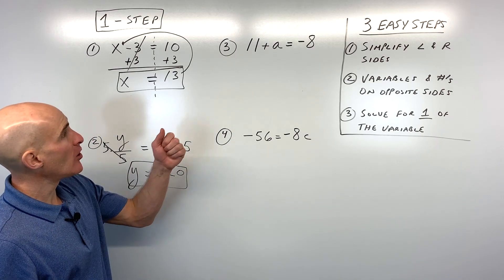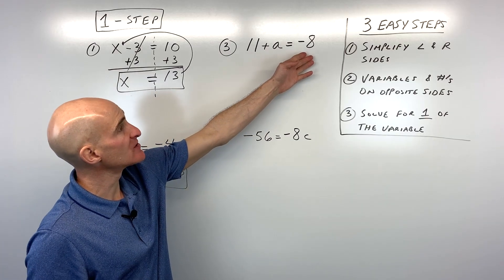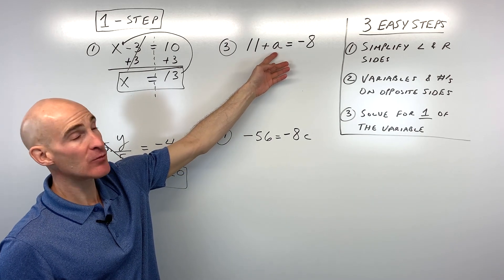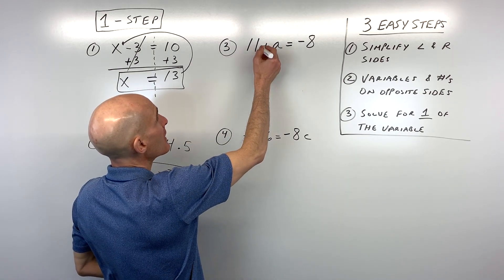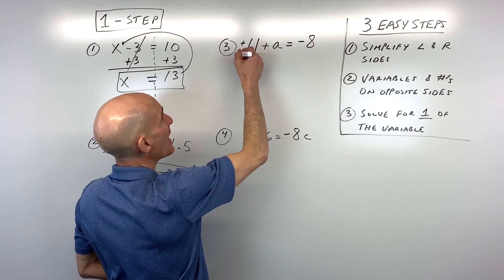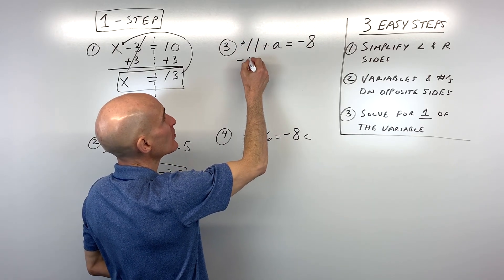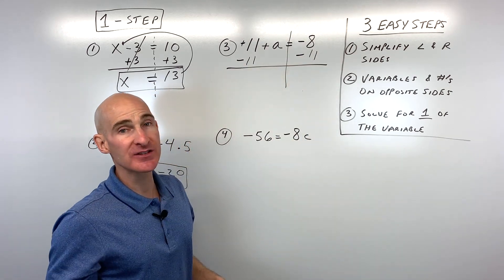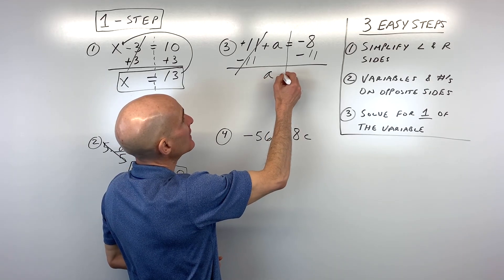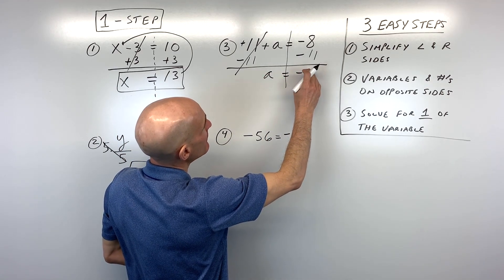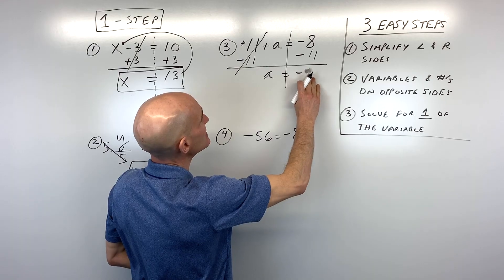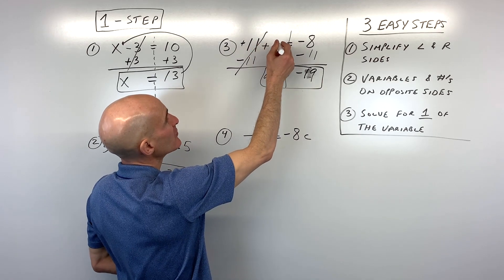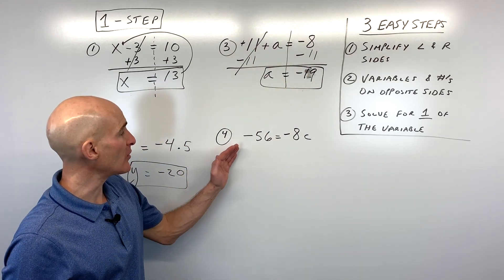Number three: 11 plus a equals negative 8. We want to get the variable by itself, so we have to get rid of the 11. The opposite of positive 11 is subtracting 11. Whatever we do to the left we do to the right. Those cancel out and we get a equals negative 8 minus 11, which is negative 19. To check: 11 plus negative 19 equals negative 8. Correct.